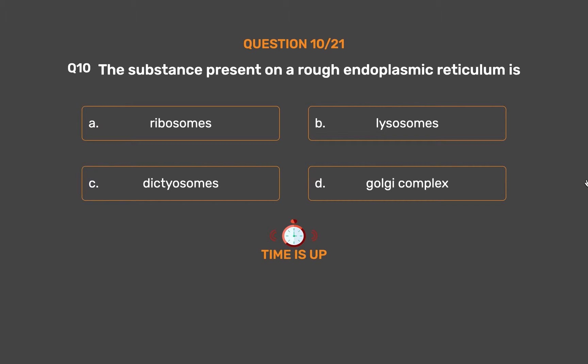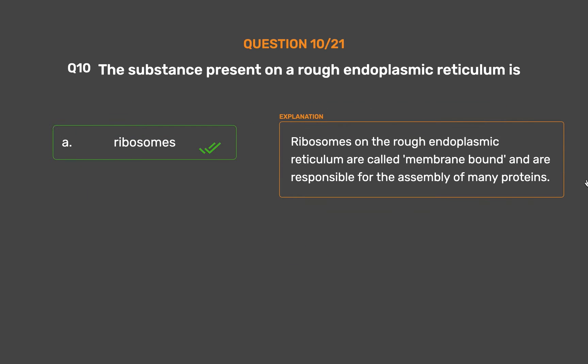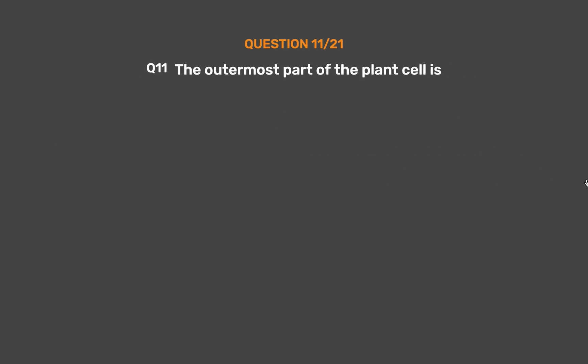The correct answer is Option A: Ribosomes. Ribosomes on the rough endoplasmic reticulum are called membrane-bound and are responsible for the assembly of many proteins.